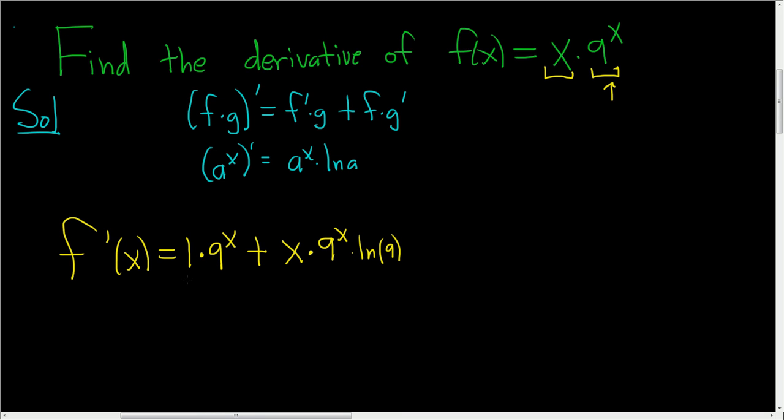To finish, we can multiply the 1 and the 9 to the x. This is 9 to the x plus... And what do you do with the natural log of 9? Well, let's just leave it there. So plus x times 9 to the x times the natural log of 9. And that is the final answer.